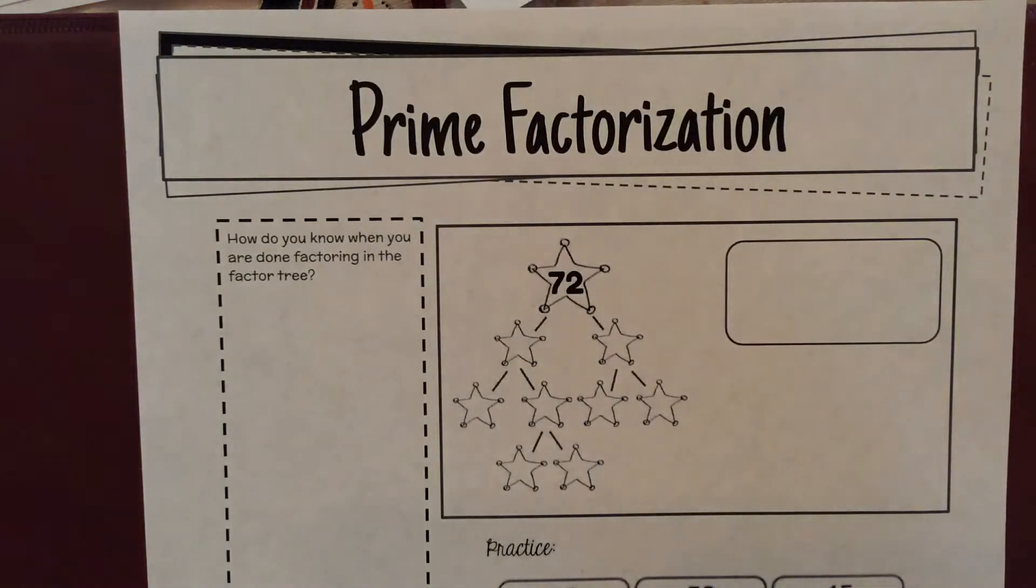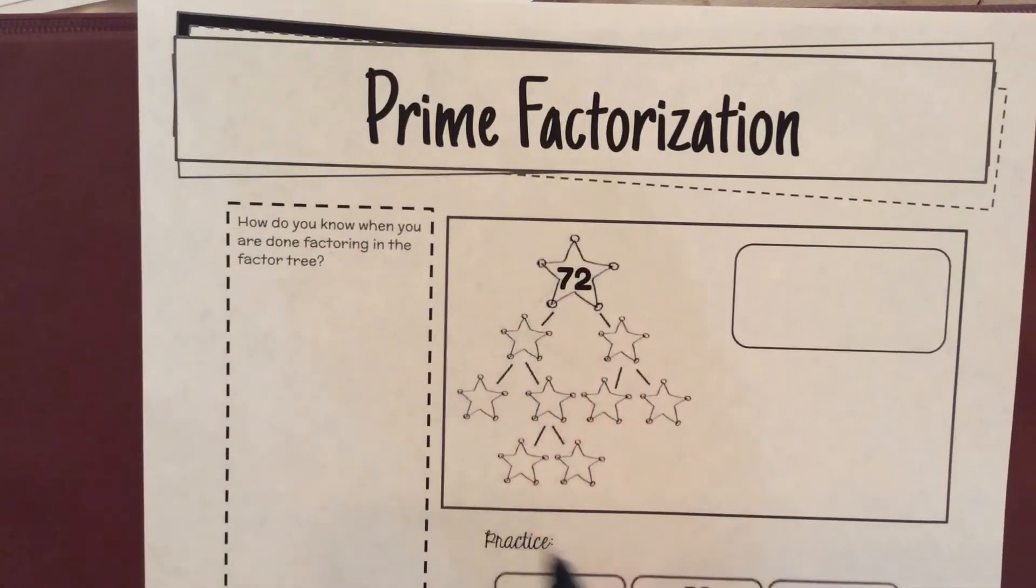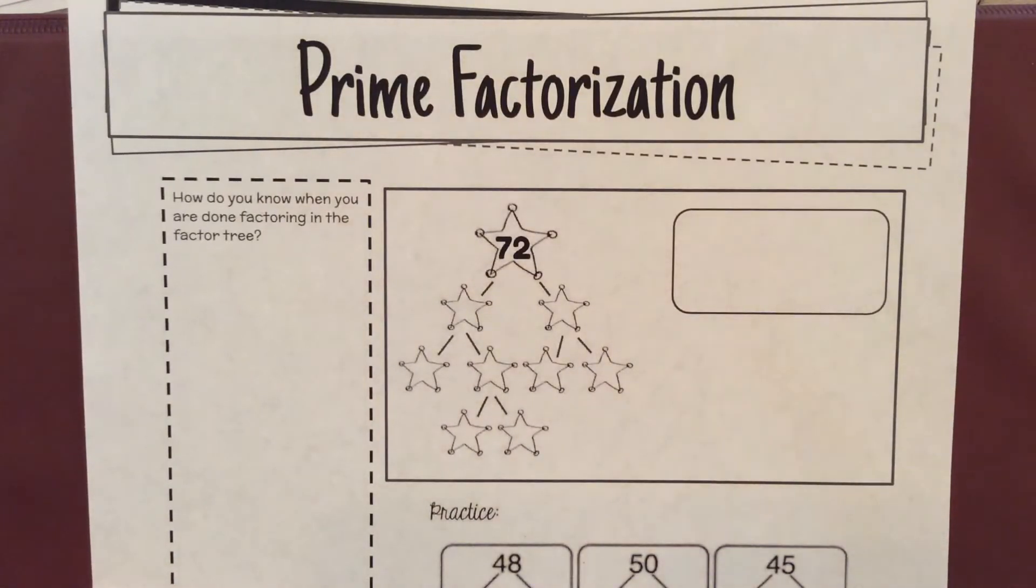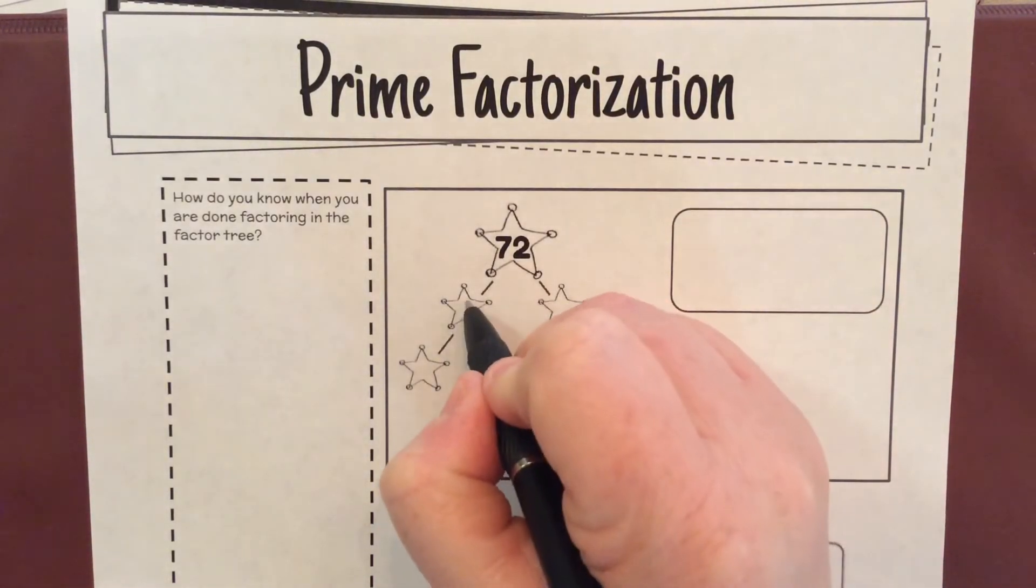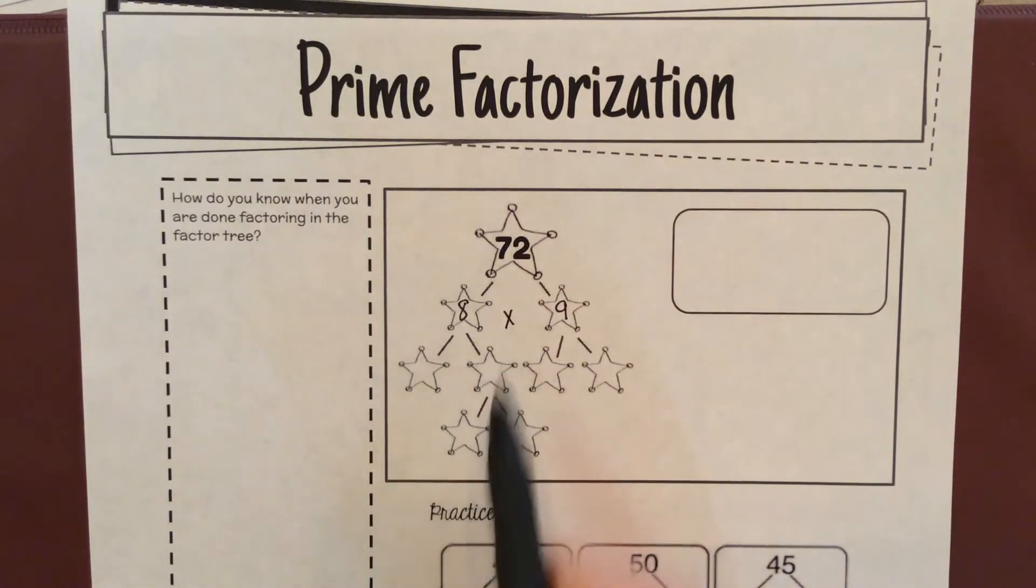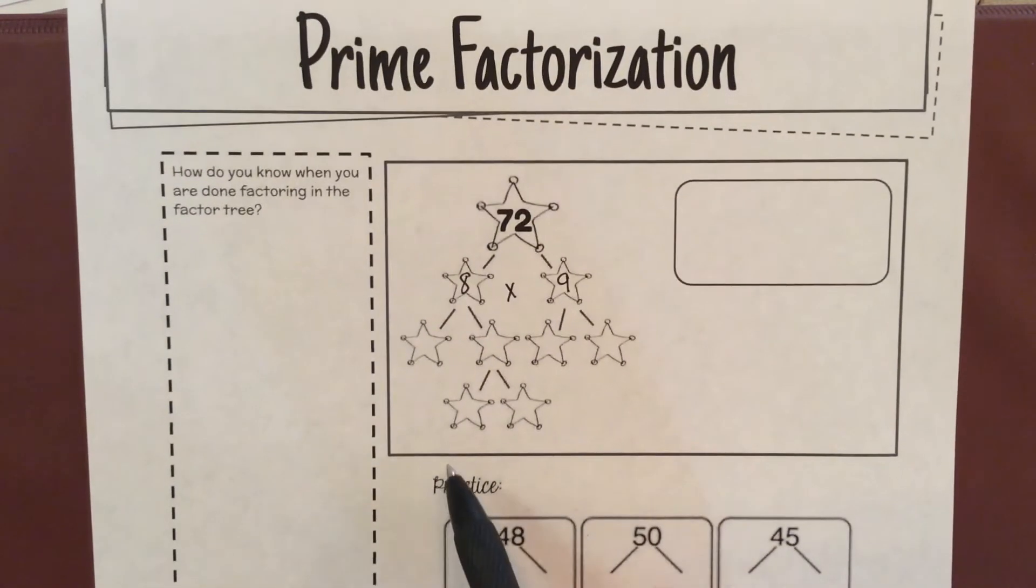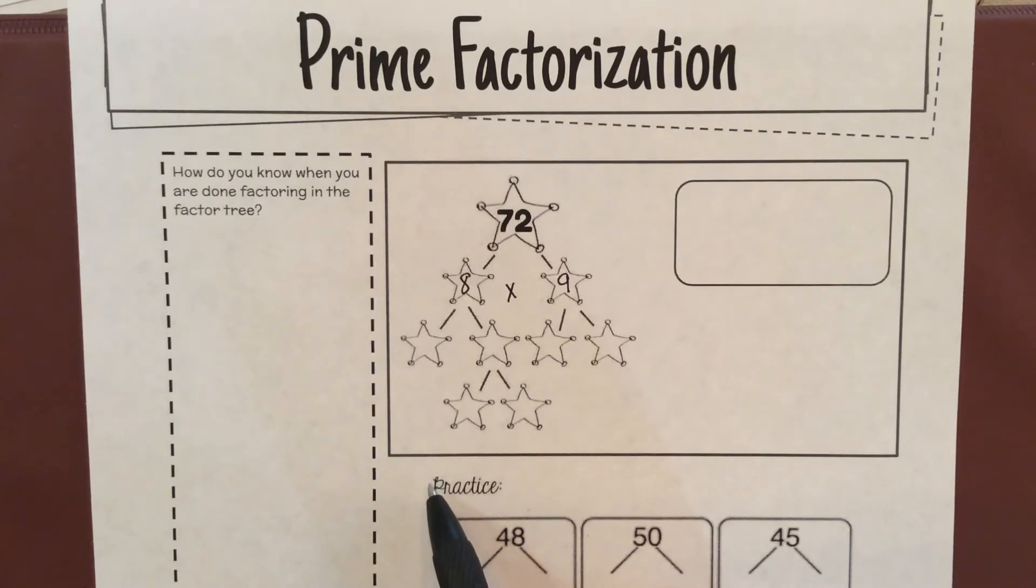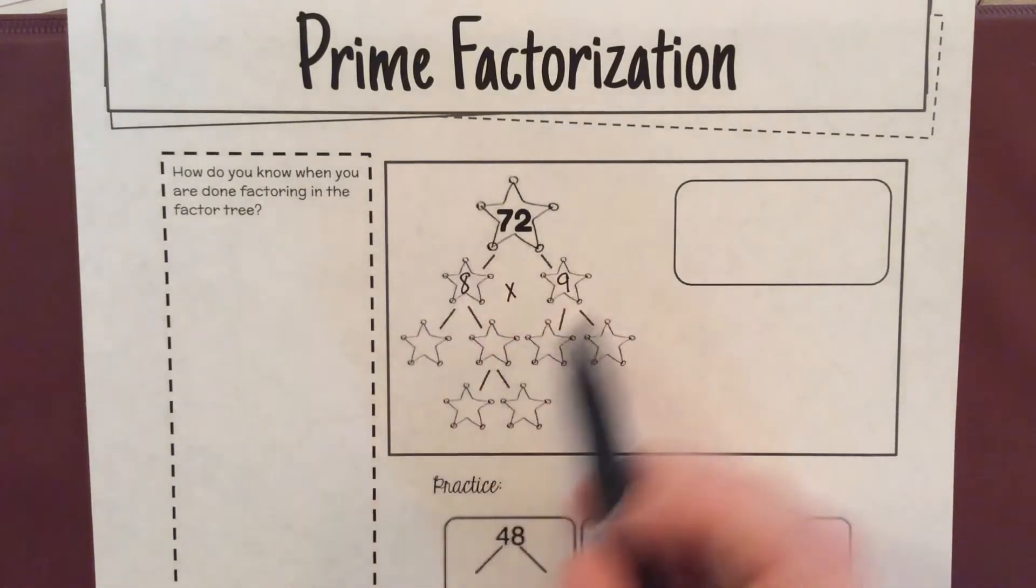All right, so now we're going to go over here to the number 72. So what numbers make up 72? The first ones that come to my mind are eight times nine. So I'm going to say eight times nine. It's important to put the times there. You could choose other numbers. You could use 12 times six, 36 times two. You could choose other things, but these are what I chose.